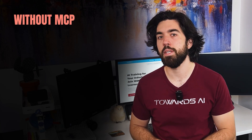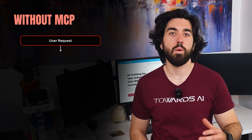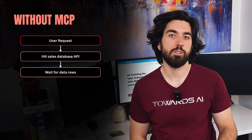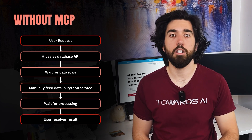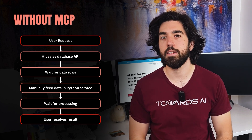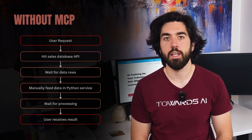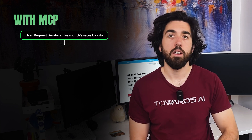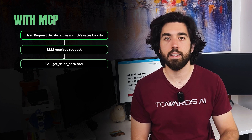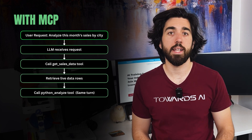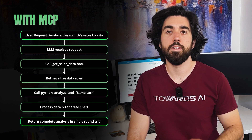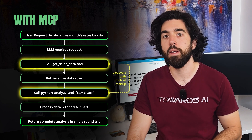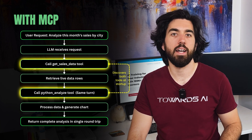Without MCP, you'd stitch each step together by hand: write code that hits the Sales Database API, wait for the rows to come back, then feed the data into a separate Python service, wait again, and finally ship the output to the user. The language model can't see or coordinate those tools on its own — you act as the middleware every time. With MCP, the whole chain sits on the server's menu. When a user asks 'analyze this month's sales by city,' the model can call a get-sale-data tool, grab the live rows, immediately pass them to a Python Analyze tool in the same breath, and return a ready-made chart — all inside one round trip.